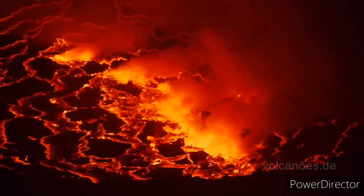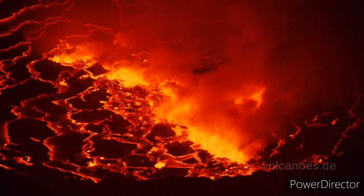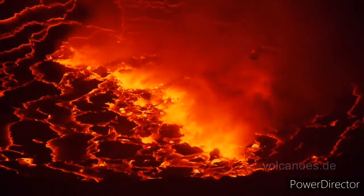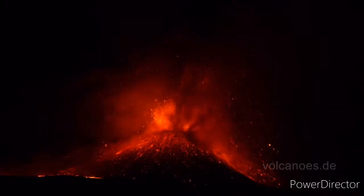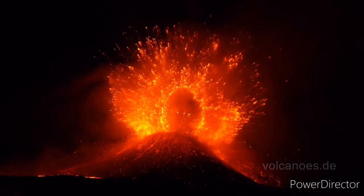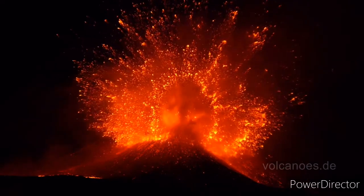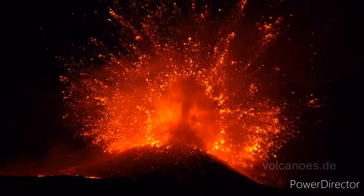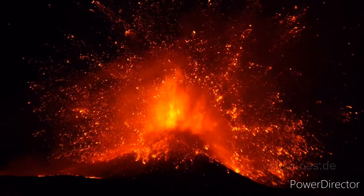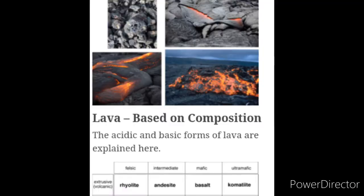The magma is also crystalline when cool. The acidic magma is very catastrophic in nature. Types of volcanoes include active, dormant, and extinct.